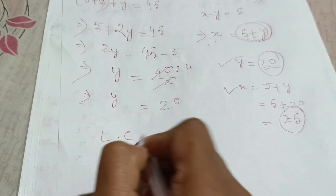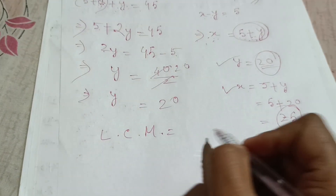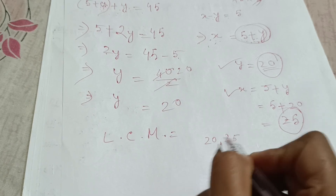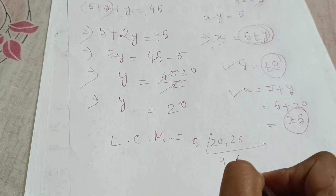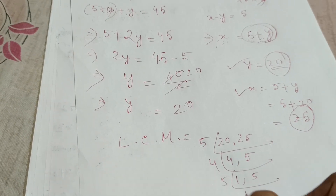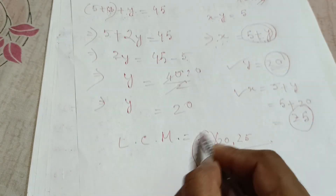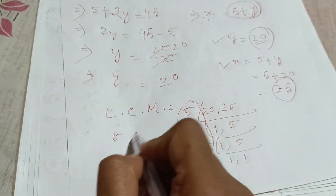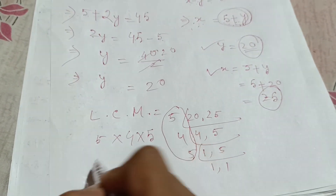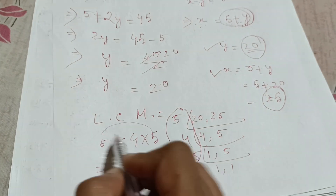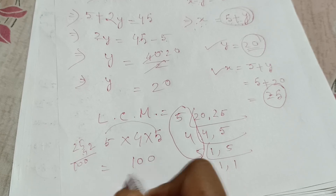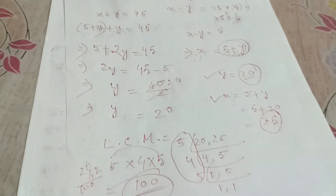LCM — we find the LCM of these numbers, mainly. The LCM is found using the positive values. 5 into 4 into 5 equals the product of positives, giving us 100. So the LCM is 100.